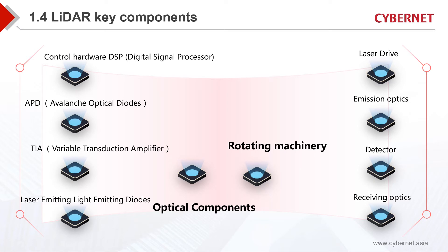LiDAR has many components and can be divided into two categories: optical components and rotating machinery. For electronic components, most of them revolve around optical components, such as the lens group combined with rotating machinery, to make some adjustment to the divergence of light and the horizontal and vertical resolutions.